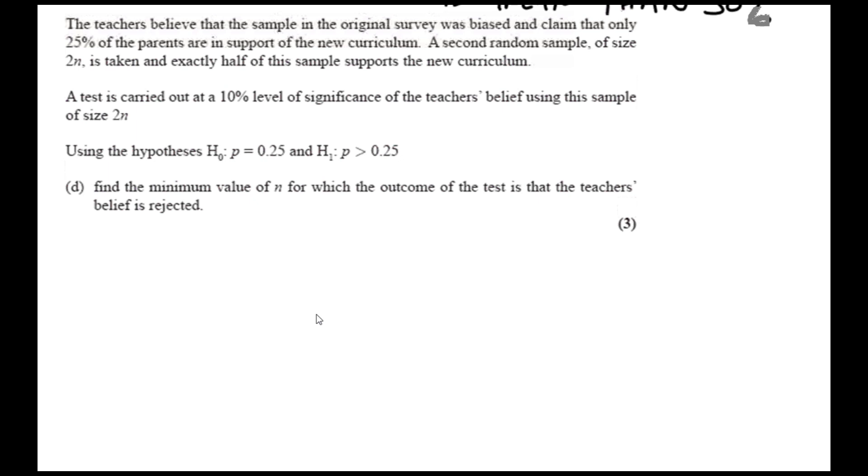The teachers believe that the sample in the original survey was biased and claimed that only 25% of parents are in support of the new curriculum. A second random sample of size 2n is taken and exactly half of this sample supports the new curriculum. A test is carried out at a 10% level of significance of the teacher's belief using this sample size of 2n. Using the hypothesis as stated, find the minimum value of n for which the outcome of the test is that the teacher's belief is rejected.